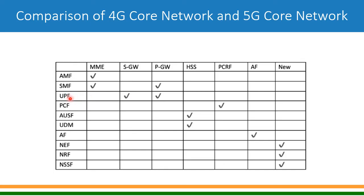User Plane Function in 5G has taken the user-plane part of the functions from Serving Gateway and PDN Gateway — meaning Serving Gateway and PDN Gateway are merged into UPF, but only the user-plane part; the control-plane parts are not merged into UPF. Policy and Control Function in 5G is equivalent to PCRF — Policy and Charging Rule Function — in 4G.